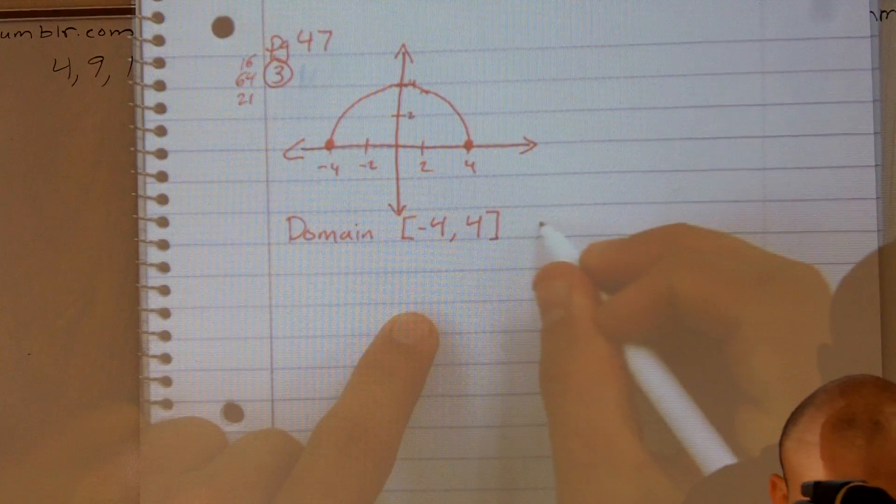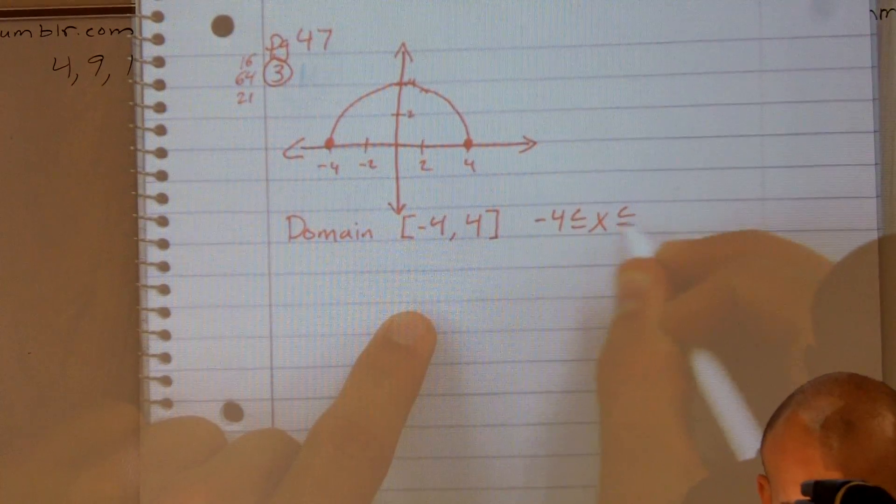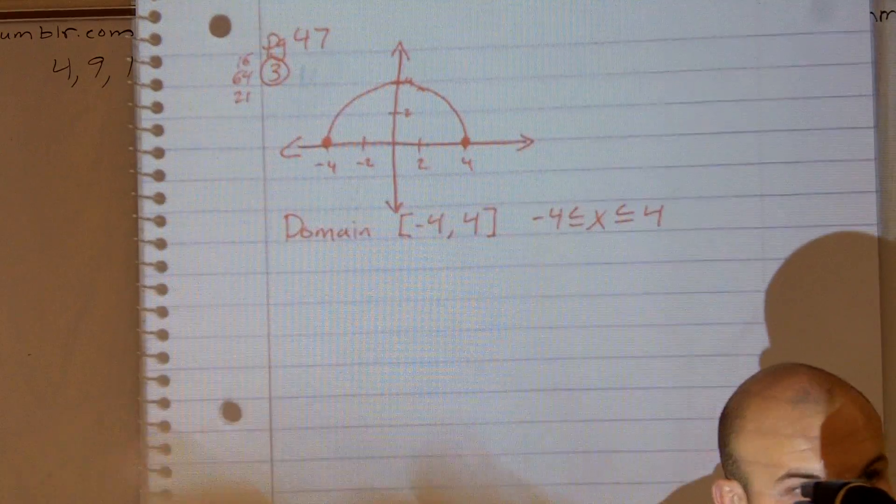You also could write negative 4 is less than or equal to x, which is less than or equal to 4. That's another way you could write your domain.